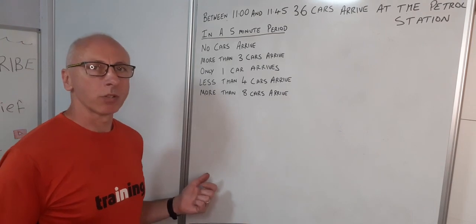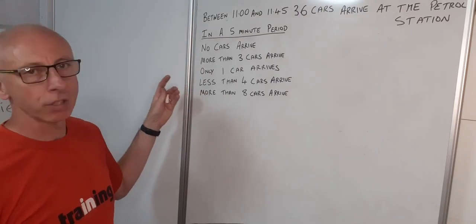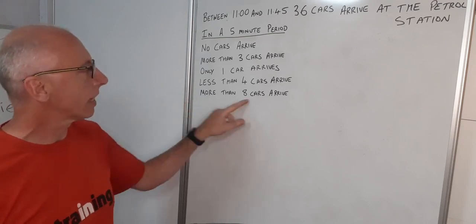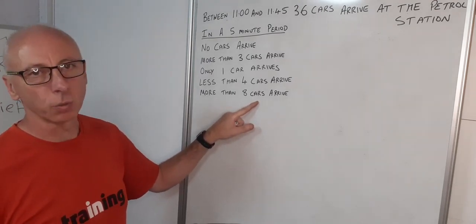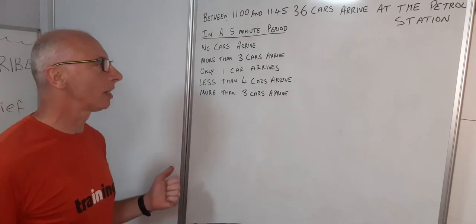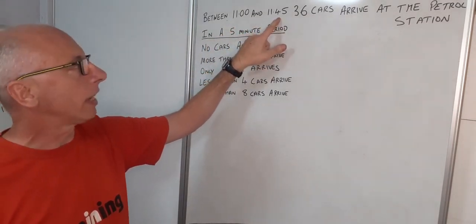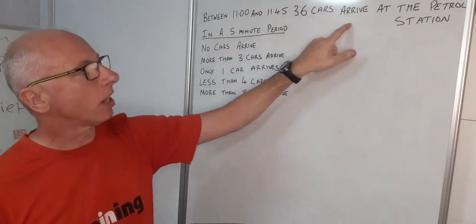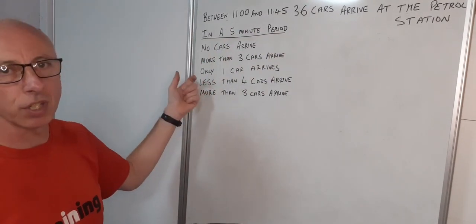Someone who owns a petrol station wants to know the probability of five scenarios happening. They want to know how many people to have on duty at the tills, and whether more than eight cars arrive, since they only have eight filling spaces and don't want a queue. Between 11 o'clock and 11:45, a typical period, 36 cars arrive. They're interested in a five-minute period because that's the average time it takes to fill up and leave.